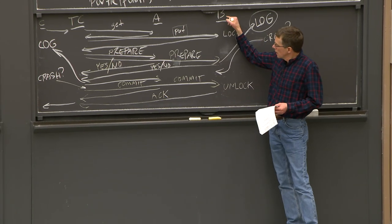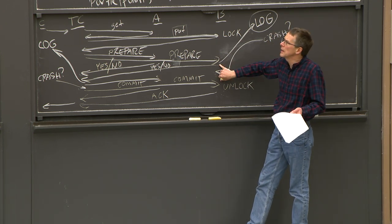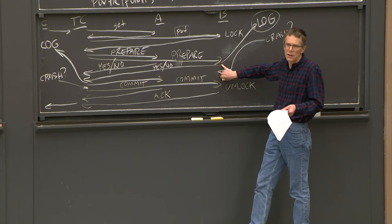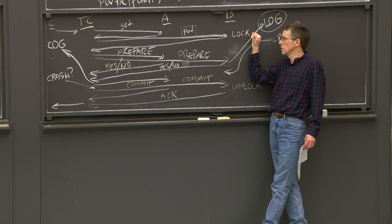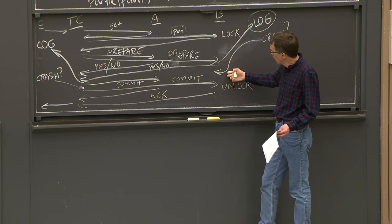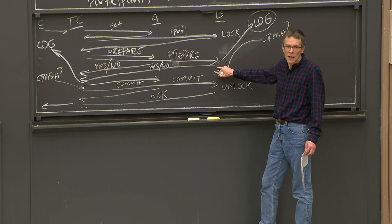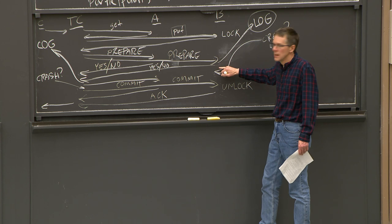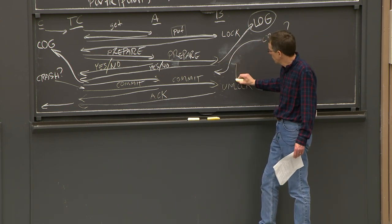One fundamental reason the protocol works is that the decision is made by a single entity — the transaction coordinator alone — not A and B in conversation with each other. Only the coordinator decides commit or abort and tells the parties what to do. The penalty for this single-entity decision is that participants must block at some point, waiting for the coordinator to communicate the decision.